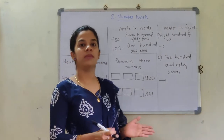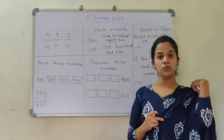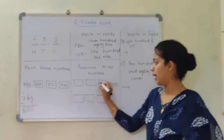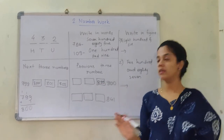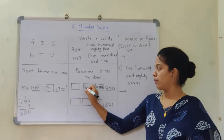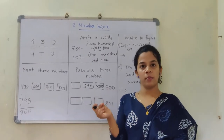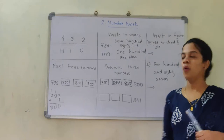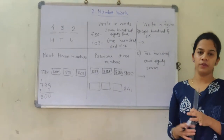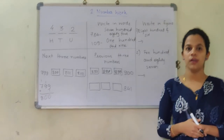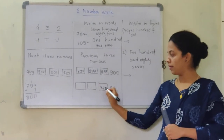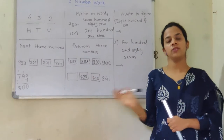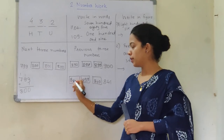Now they have asked for the previous numbers, meaning the earlier numbers before a given number. Starting with 900: if you remove 1, the previous number is 899. The next previous number — keeping 8 constant — if you subtract 1 from 99 it is 898, and reducing one more gives 897. Similarly, for 841: the previous number is 840 (8 constant), then 839, and then 838.